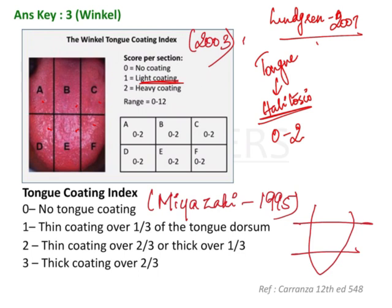London in 2007 noticed that the light coating present is usually a normal finding. If you use score 1 for light coating, it is prone to give false results. That is the reason why he removed score 1, and that is what is called the modified Winkle Tongue Coating Index.